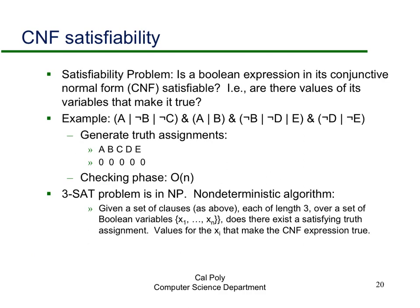How is this proven? There's a problem called CNF satisfiability: are there values for Boolean variables that satisfy a Boolean expression in conjunctive normal form? That form is a set of clauses connected by ANDs, where each clause is a set of Boolean variables connected by ORs. For the whole expression to be true, each clause must be true. This is clearly in NP: a certificate is simply a set of values for the Boolean variables, and checking whether they satisfy the expression is linear in the length of the expression.